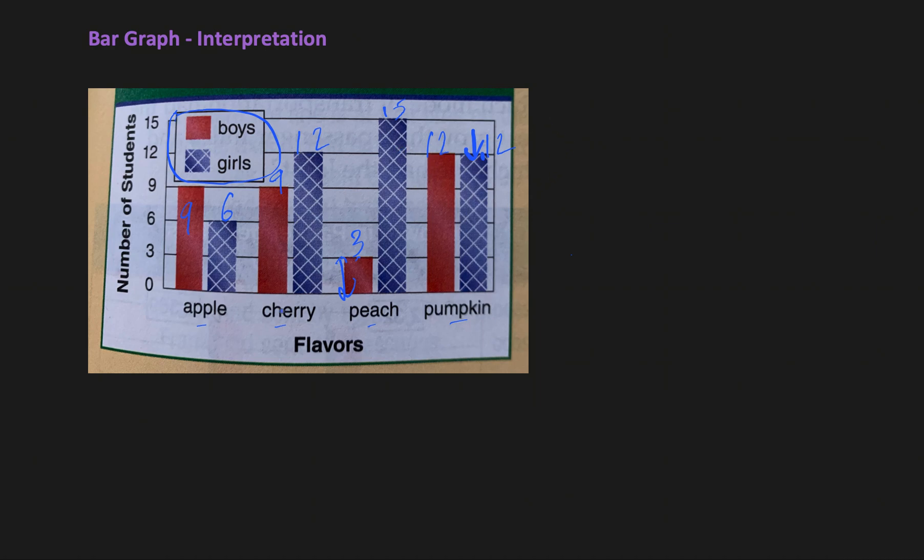Going back to our questions, in this case we had 78 students, and if you want to say how many students in total voted for either apple or peach pie.